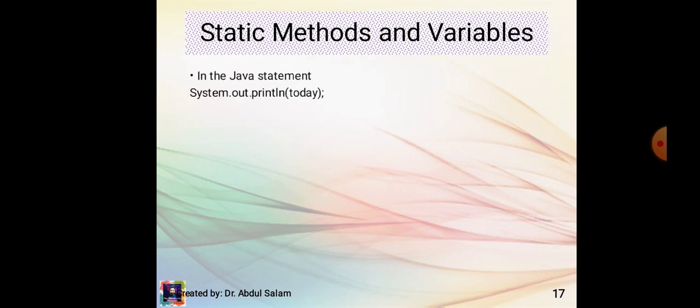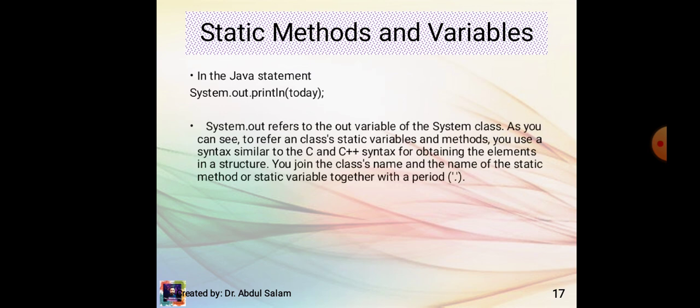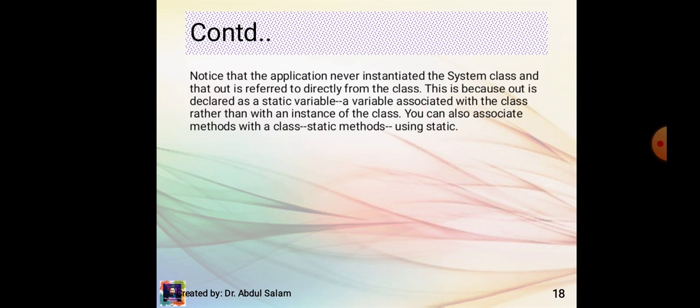Static methods and variables in Java: in the statement System.out.println, System.out refers to the out variable of the System class. To refer to a class's static variable and methods, you use a syntax similar to C and C++ — you join the class name and the static method or variable together with a period. The application never instantiates the System class; out is referred to directly from the class because it is declared as a static variable associated with the class rather than with an instance.